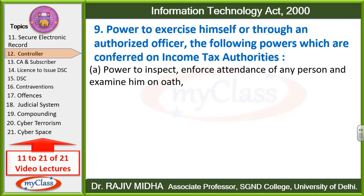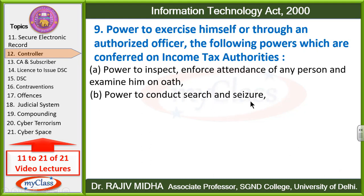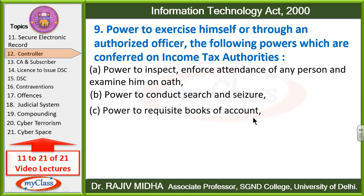Mein aapke saamne ab ek lambi list le raha hoon: A) Power to inspect — controller kisi bhi record ko, data ko, information ko, computer resource ko inspect kar sakta hai. B) Enforce attendance of any person — kisi bhi vyakti ko apne office mein aane ke liye compelled kar sakta hai — and examine him on oath — aur usse yeh kaha ja sakta hai ki tum shapathpatra ke upar apni statement do. C) Power to conduct search and seizure — controller kisi bhi office ke andar search kar sakta hai aur wahan computer resources ko seize kar sakta hai. D) Power to requisite books of accounts — controller kisi bhi vyakti ya company ko apni books of accounts laane ke liye apne office ke andar compelled kar sakta hai.